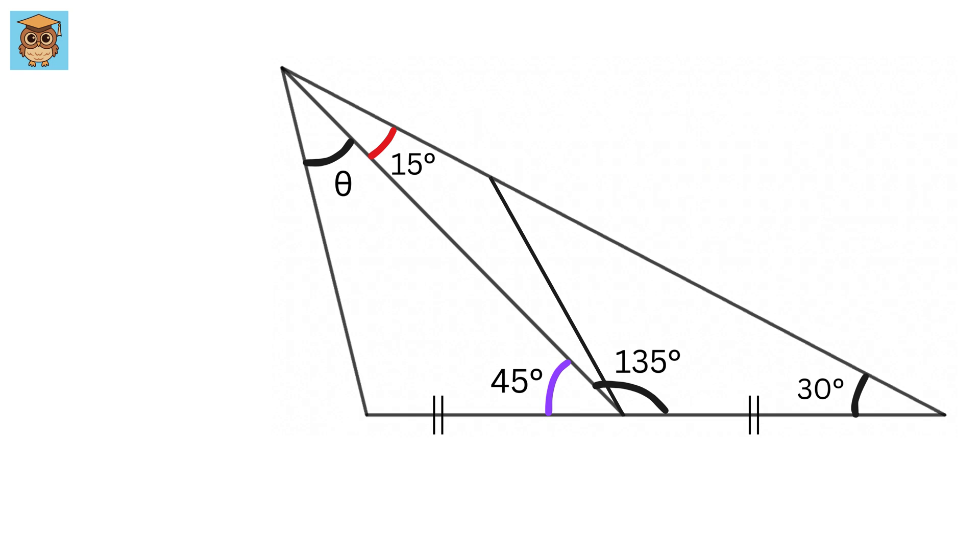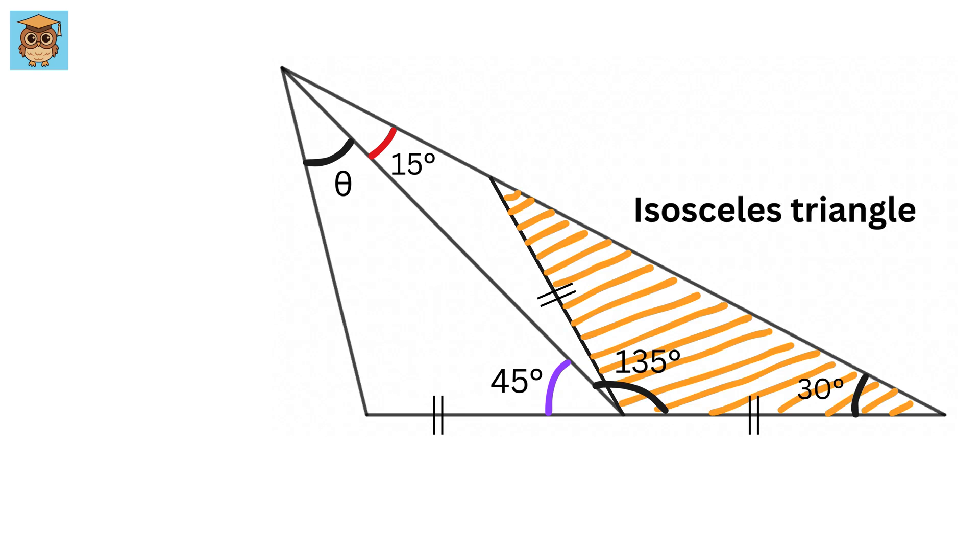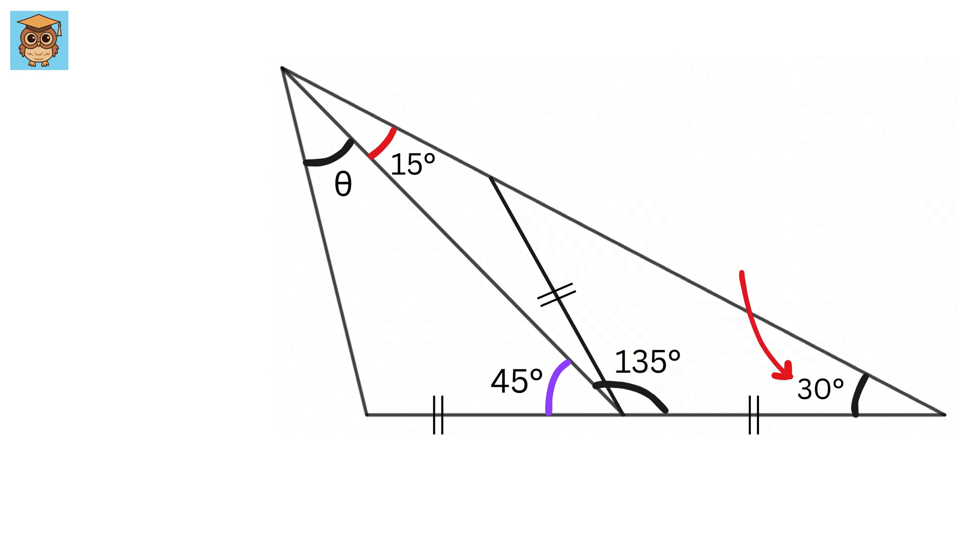Now, let us draw this line such that this length is the same as this length. Therefore, we can see that this triangle will be an isosceles triangle, right? So, if this is 30 degrees, then this will also be, yeah, you guessed it right, it will be 30 degrees as well.